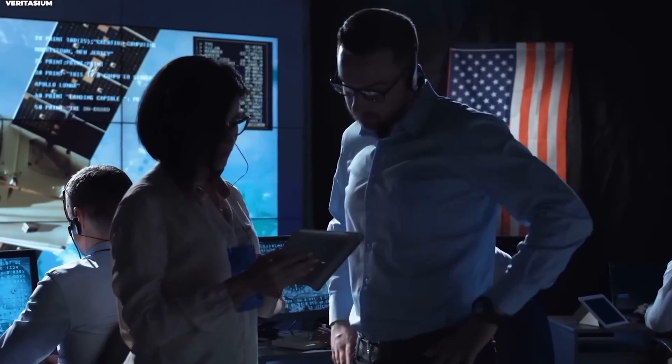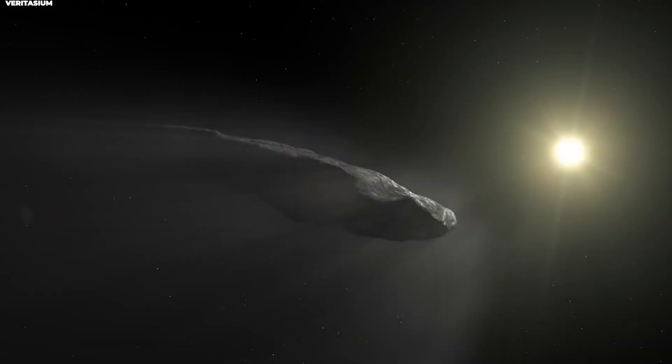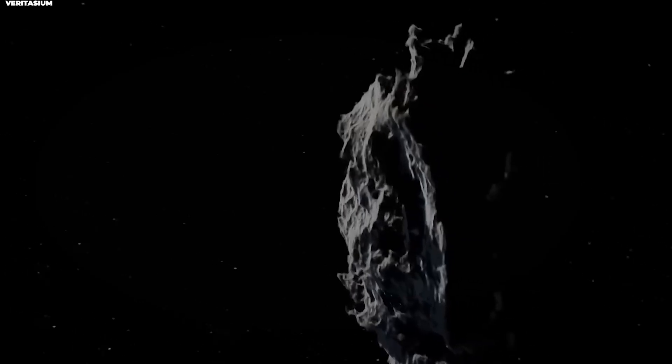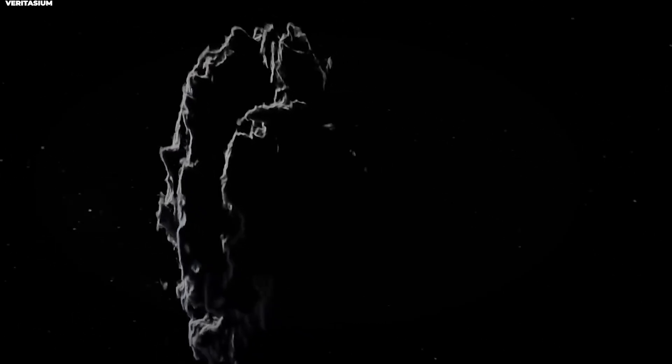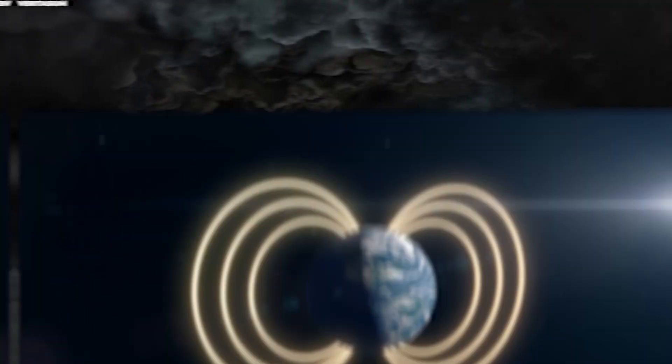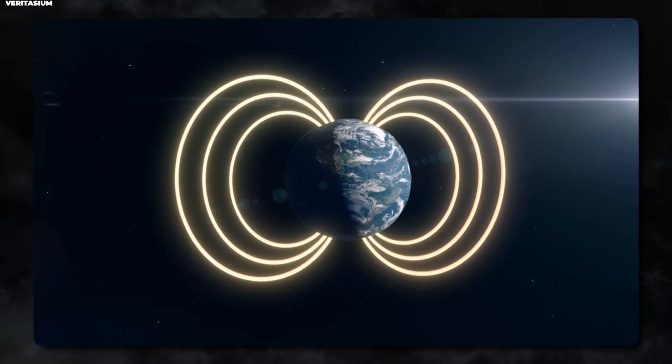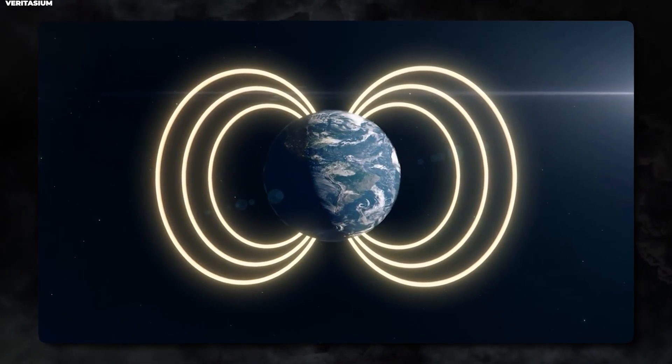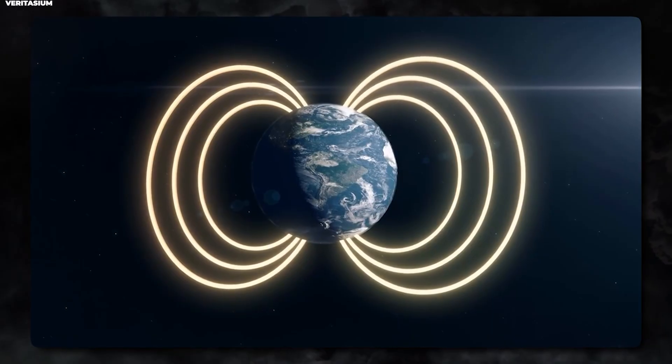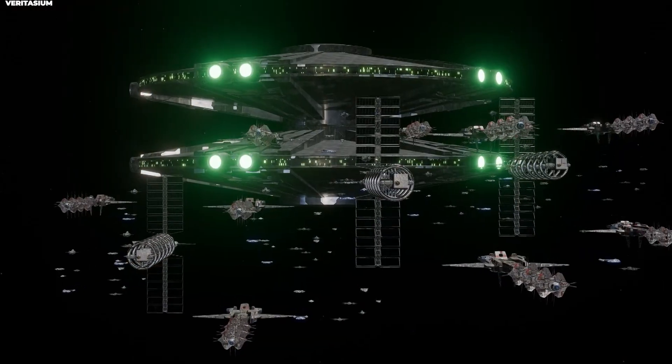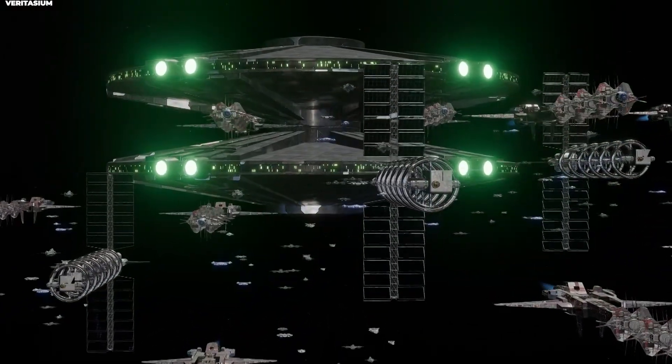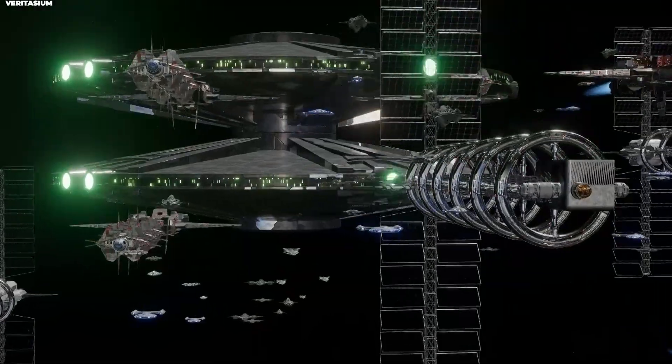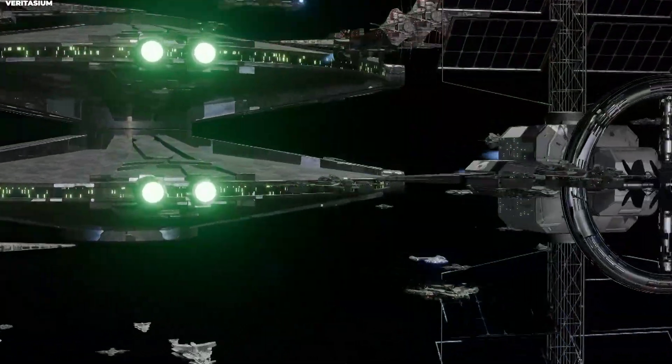What made scientists immediately realize 3i-ATLAS was special? It's all about the orbit. When astronomers calculate an object's trajectory, they look at something called orbital eccentricity. A perfectly circular orbit has an eccentricity of zero. Earth's orbit, for example, has an eccentricity of about 0.017, making it nearly circular.